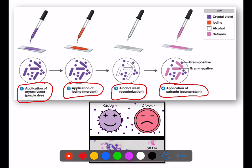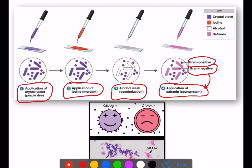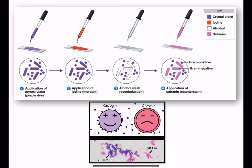The summary: bacteria which retain the primary stain (crystal violet) are considered gram positive bacteria, and bacteria which lose the primary stain and take up the counter stain are gram negative bacteria. On the microscopic slide, bacteria retaining the purple crystal violet color are gram positive, whereas bacteria appearing pink — taking up safranin — are gram negative.